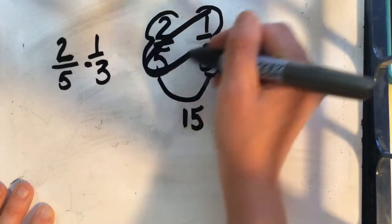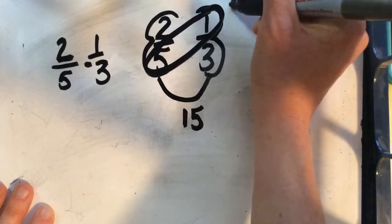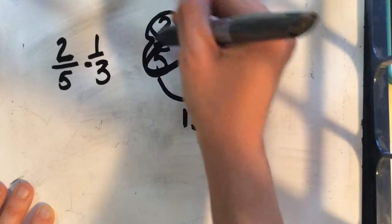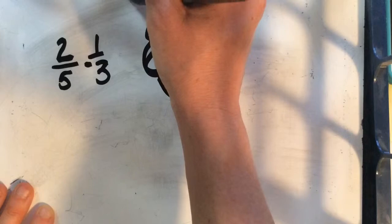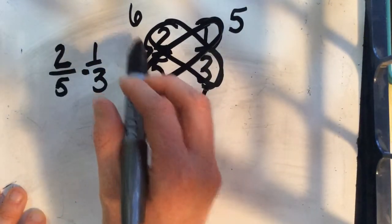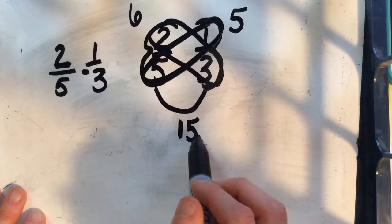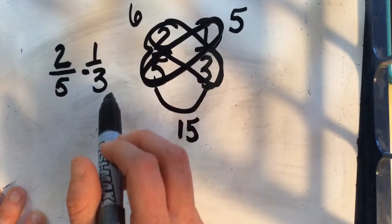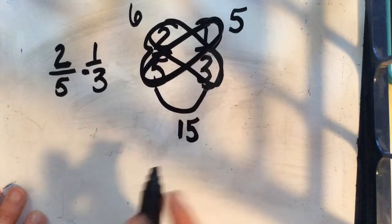So 5 times 1 is 5, and 2 times 3 is 6. So an equivalent fraction for 2 fifths would be 6 fifteenths, and an equivalent fraction for 1 third would be 5 fifteenths.